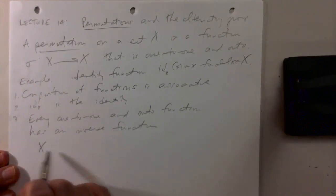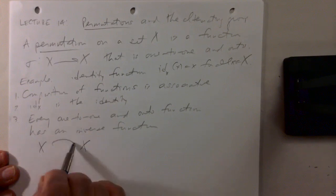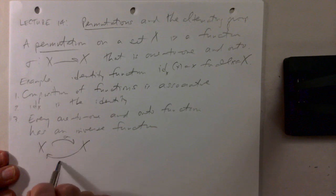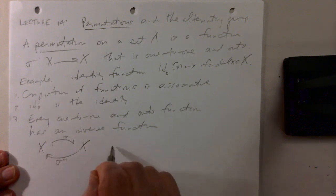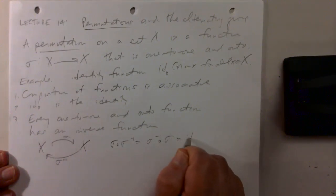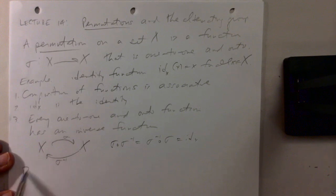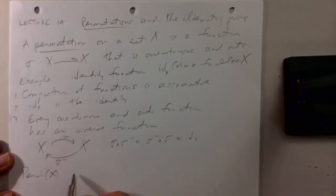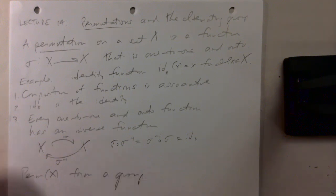So we have sigma going from X to X. There's another function sigma inverse from X to X with the property that sigma composed with sigma inverse, and sigma inverse composed with sigma, is the identity. So for any set X, the permutations form a group, and the binary operation — the multiplication — is composition of functions.